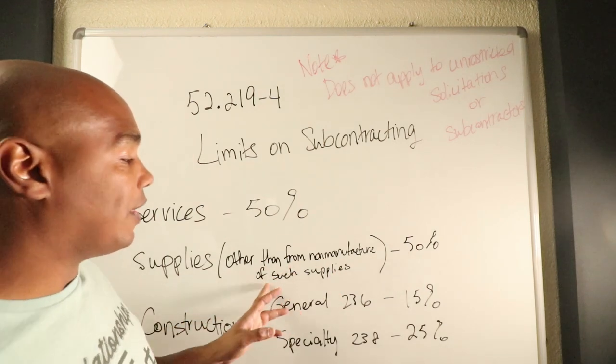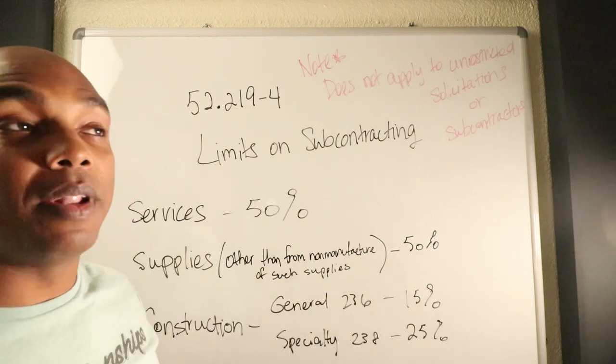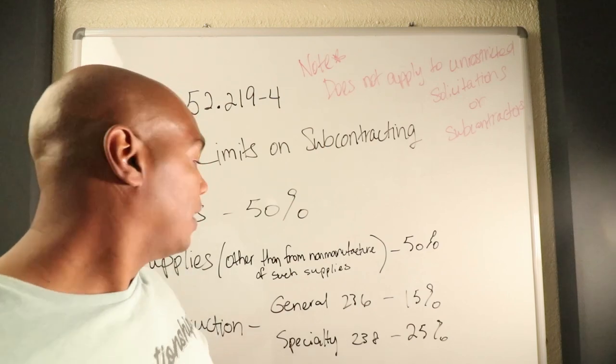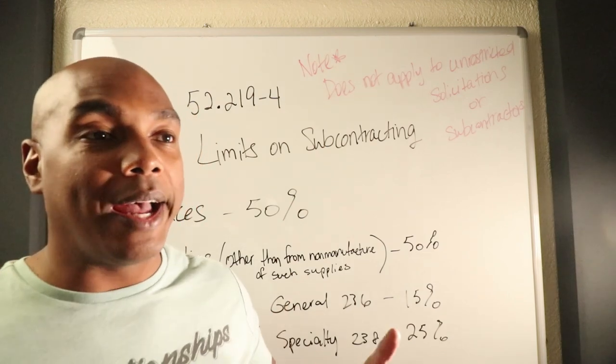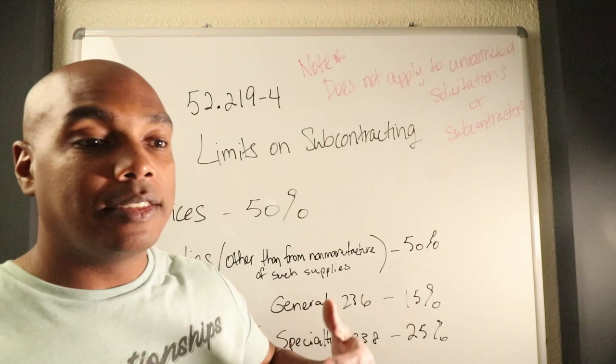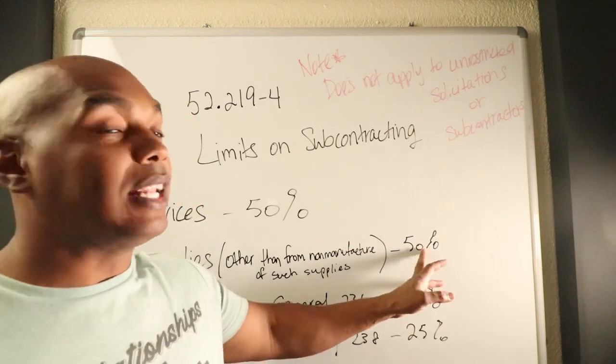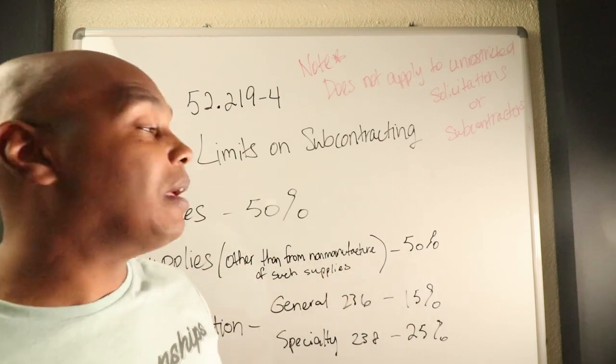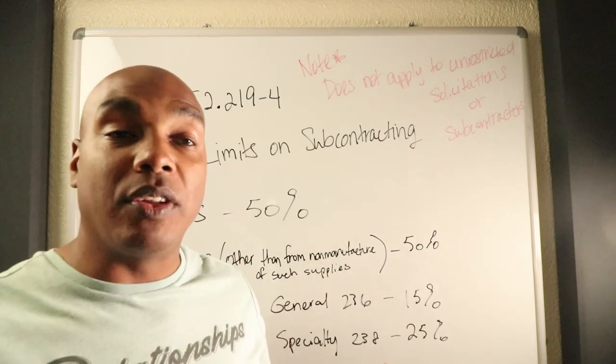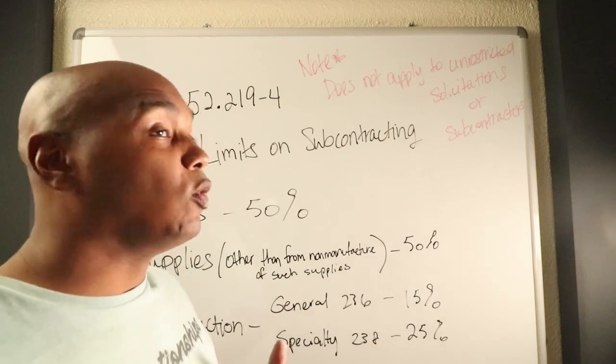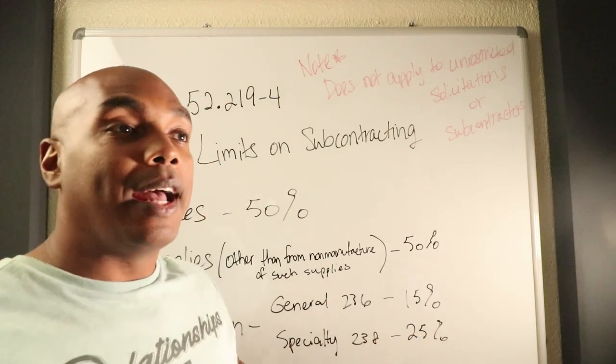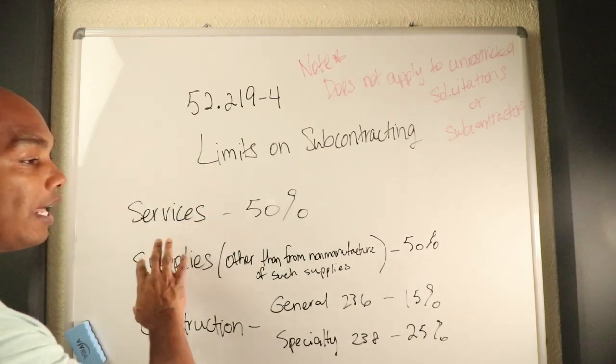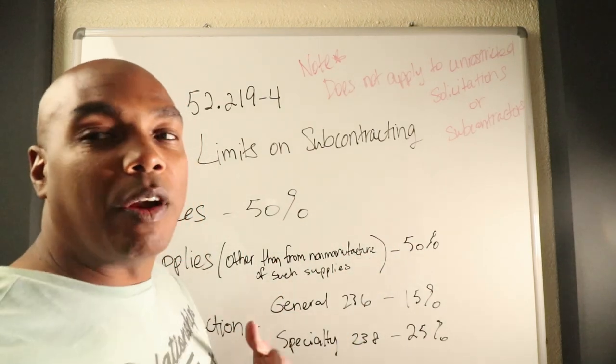If you provide supplies, this one's a little bit trickier. If you provide supplies other than from non-manufacturer of supplies, you've got to do 50% of supplies. Now if the government puts out a quote for iPads, CDs, or laptops, that doesn't apply to you because you are a non-manufacturer. In that particular instance, you could resell a product and not be part of that 50%.